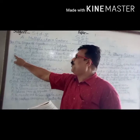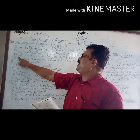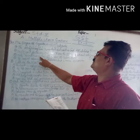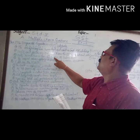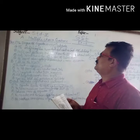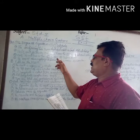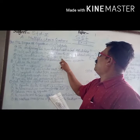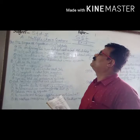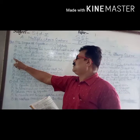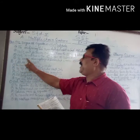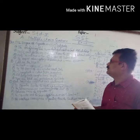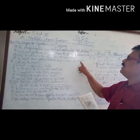Question Number 4: 23 and a half degree north latitude is the — answer: Tropic of Cancer. Question Number 5: The Royal Observatory at Greenwich is near — answer: London.